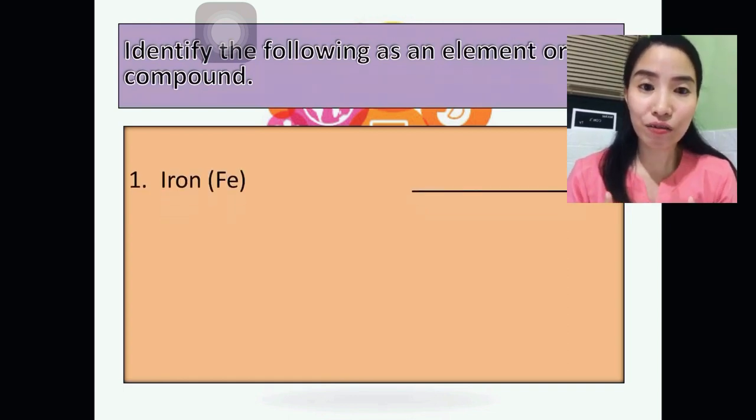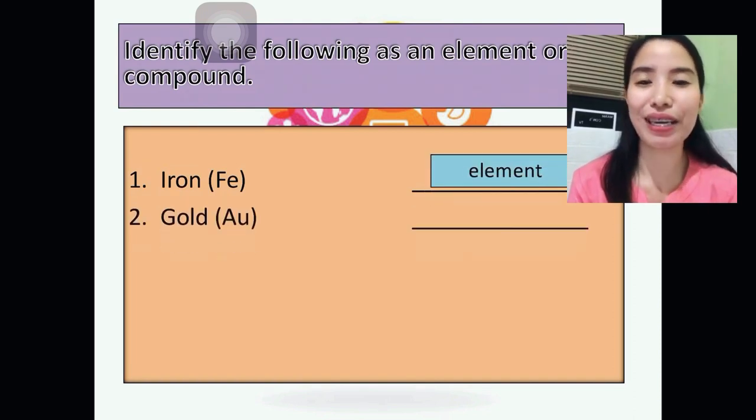First is iron, naturally found in our body and in the food that we take in. All right! So, it's an element.